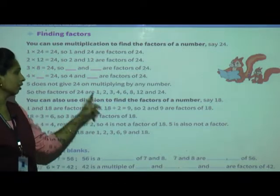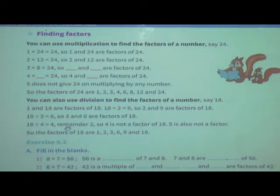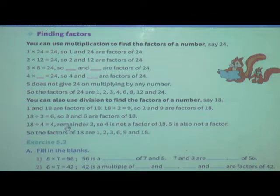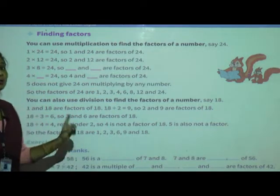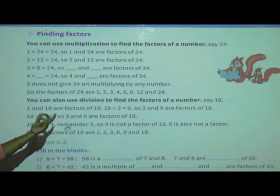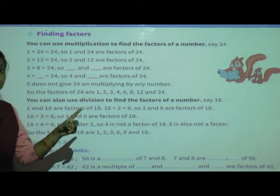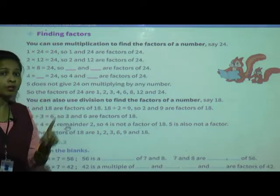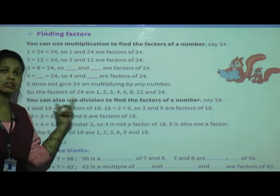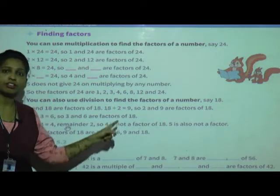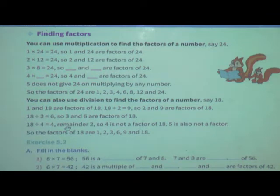We are using division also. A factor of a number divides the number without leaving a remainder — that is called a factor. Now suppose I had given 18. So with 18, whatever number you divide, there should not be any remainder. So then only that number is a factor of that given number. We have studied this deeply in our last session.